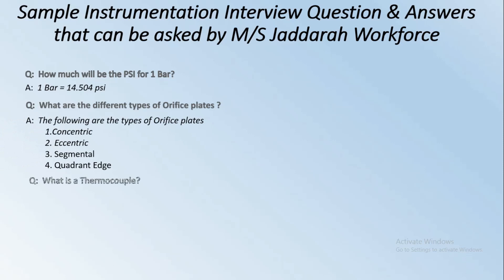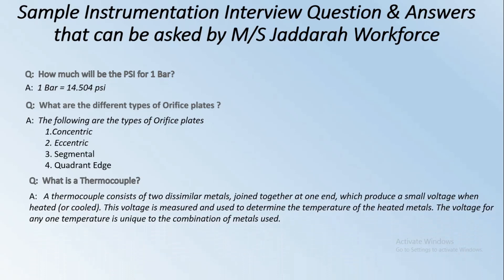Next: What is a thermocouple? A thermocouple consists of two dissimilar metals joined together at one end, which produce a small voltage when heated or cooled. This voltage is measured and used to determine the temperature of the heated metals. The voltage for any one temperature is unique to the combination of metals used.